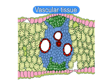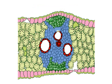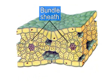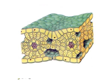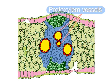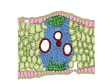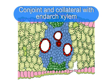Vascular tissue: Veins are found parallelly arranged in the mesophyll, as parallel venation is characteristic of monocot leaves. Each vascular bundle is surrounded by a bundle sheath composed of a single layer of compactly arranged cells. The bundle sheath encloses both phloem and xylem. In the xylem, only two proto-xylem and two meta-xylem vessels are present. The vascular bundles are described as conjoint and collateral with endarch xylem.